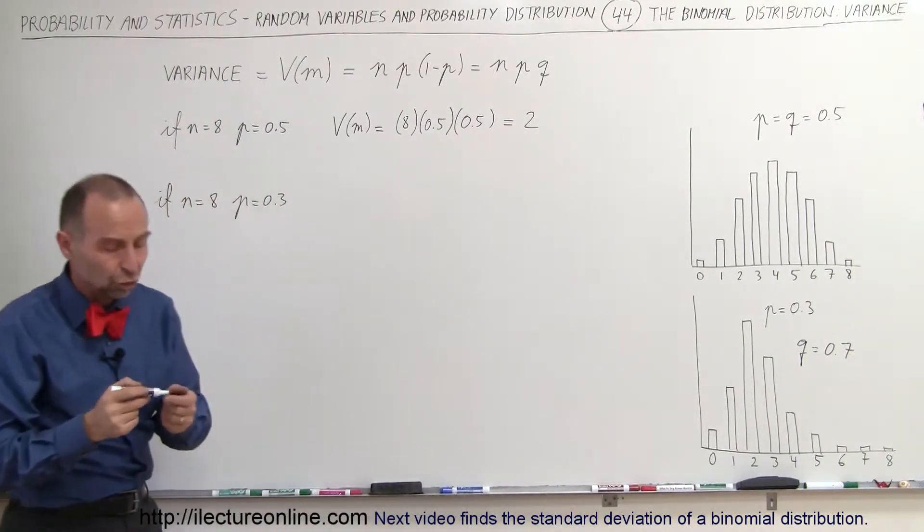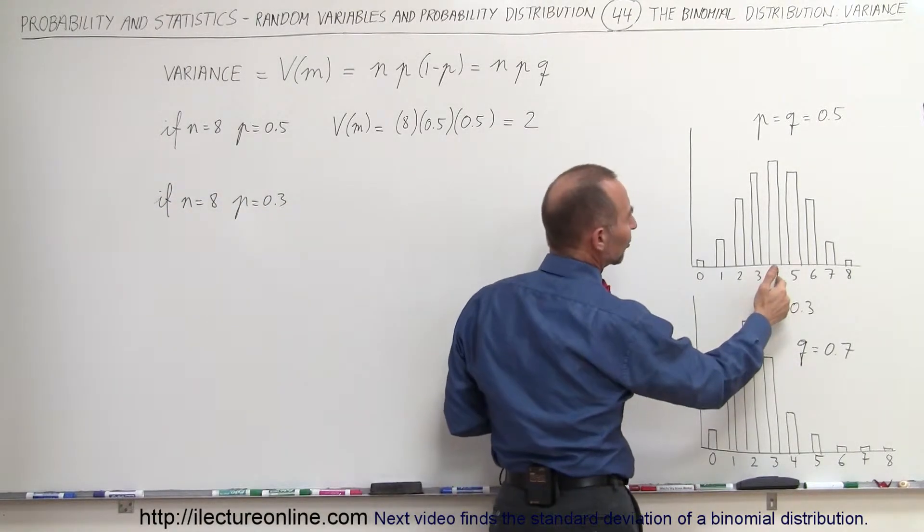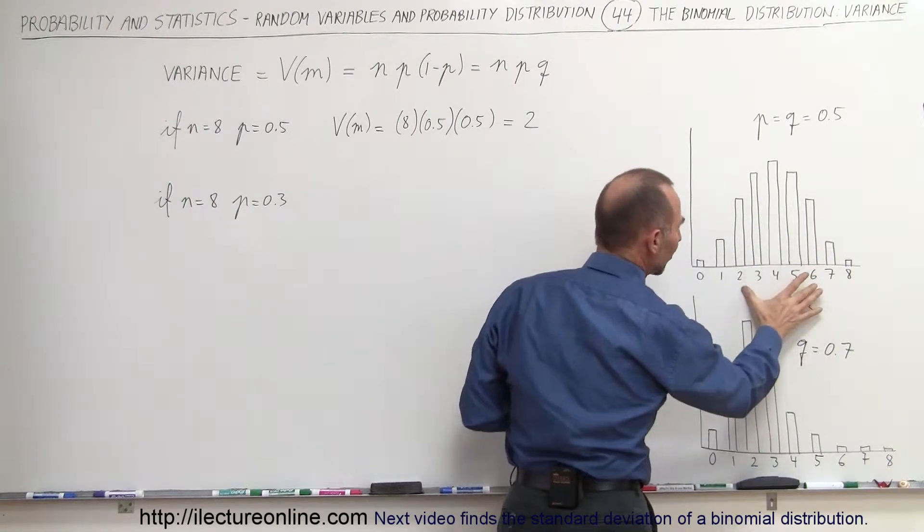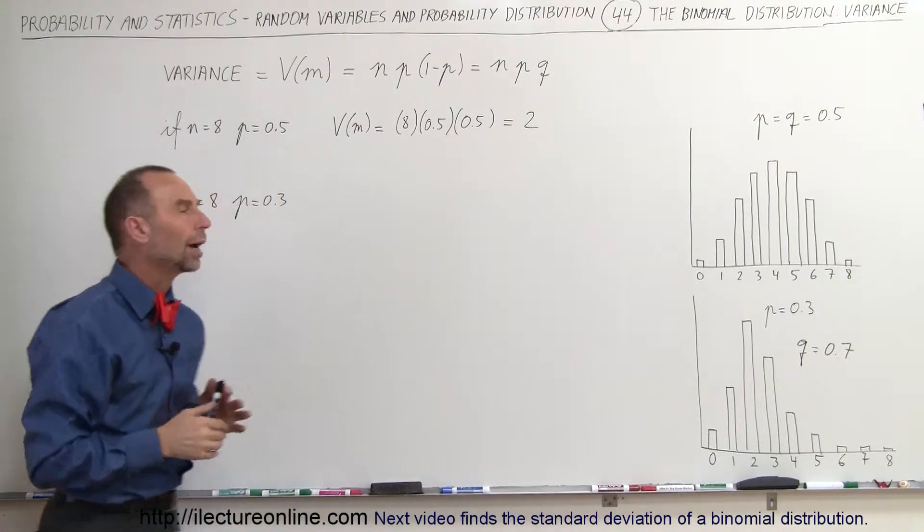So the variance here is 2, and you can see that if 4 is the expected value and 6, then the variance would be between 2 and 6. That's a fairly large variance, in other words, the data is fairly widely spread apart.